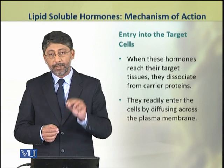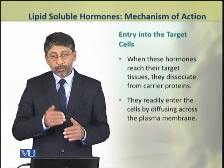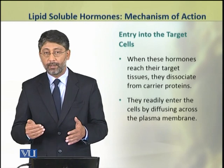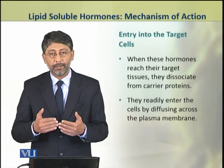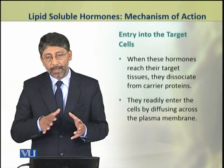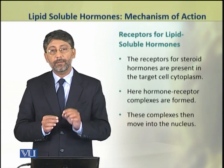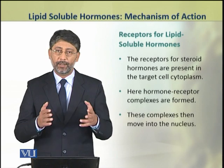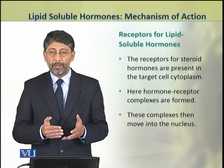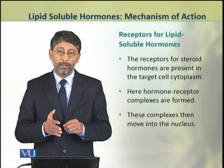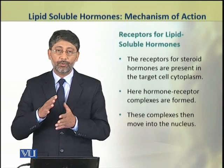Now once they reach their target cells or tissues, they dissociate themselves from their carrier proteins. Being lipid soluble, they can easily enter into the cell by dissolving in the plasma membrane. In the cell, these hormones have cytoplasmic receptors. By binding with these cytoplasmic receptors, hormones form the receptor-hormone complex. These complexes then move into the nucleus.